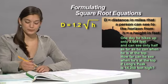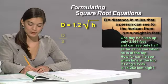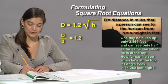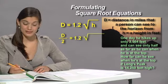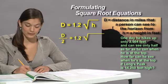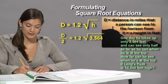Now we can make an equation. d over 2 equals 1.2 times the square root of the distance he sees when at that height of 3,564.